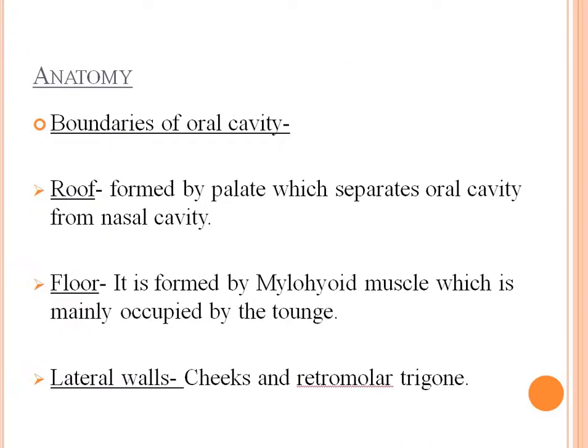The boundaries of the oral cavity: the roof is formed by the palate, which separates the oral cavity from the nasal cavity, whereas the floor is formed by the mylohyoid muscle, which is mainly occupied by the tongue. The lateral walls consist of the cheek and the retromolar trigone.